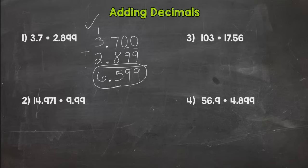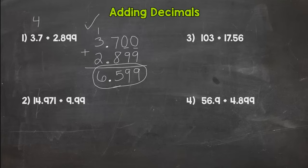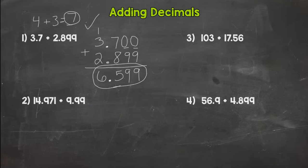Whenever you're working with decimals or even whole numbers, check to make sure your answer is reasonable. It only takes a couple of seconds — use estimation and rounding. So 3 and 7 tenths is close to 4, and 2 and 899 thousandths would round to 3. So 4 plus 3 is 7. My answer should be close to 7. And my answer here is very close to my estimation, so I have a reasonable answer.